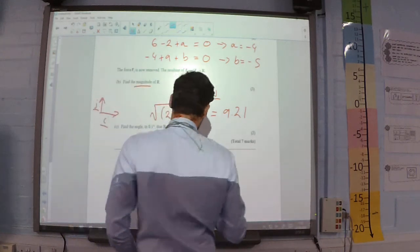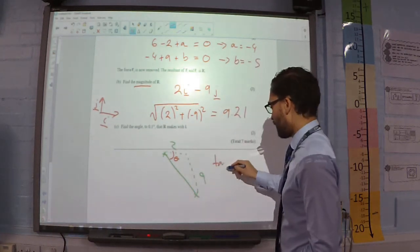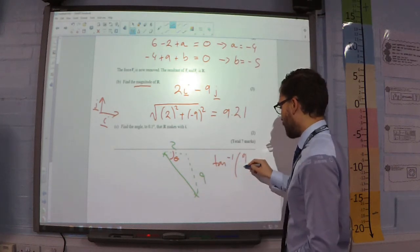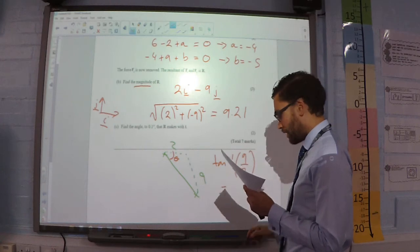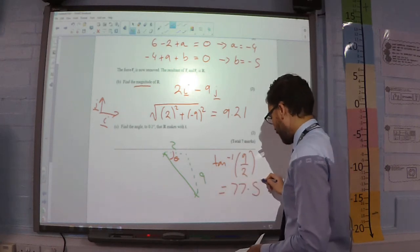So, that is going to be tan to the minus 1 opposite over adjacent. And, if we substitute that in, we will get 77.5 degrees.